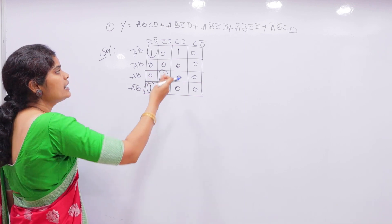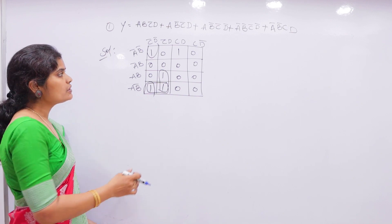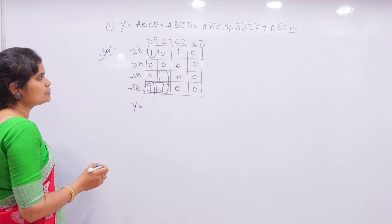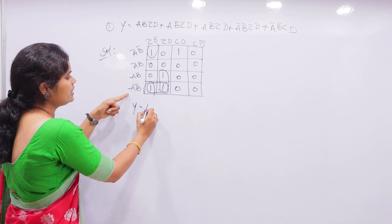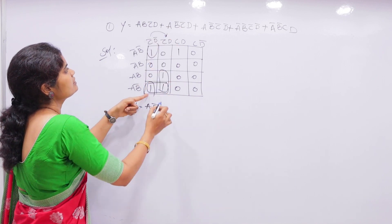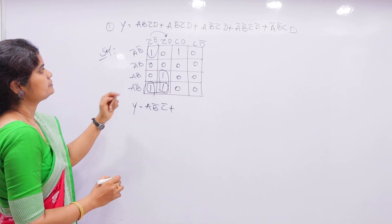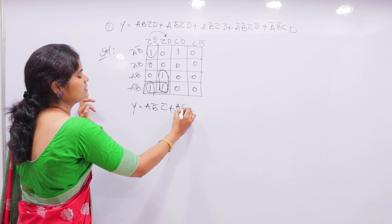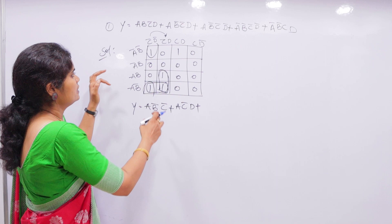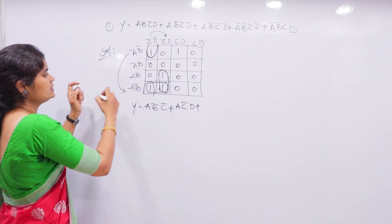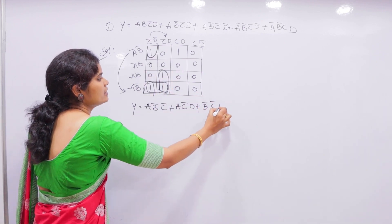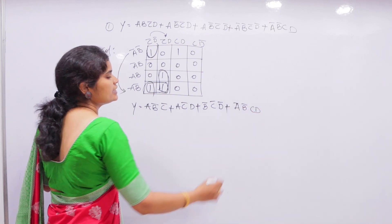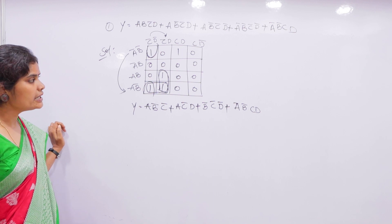Total we got three pairs. Now the answer: Y equals — first pair common element is A B-bar C-bar, plus second pair common element is A C-bar D, plus by rolling technique the common element is B-bar C-bar D-bar, plus the last one A-bar B-bar C. This is the answer for this sum.